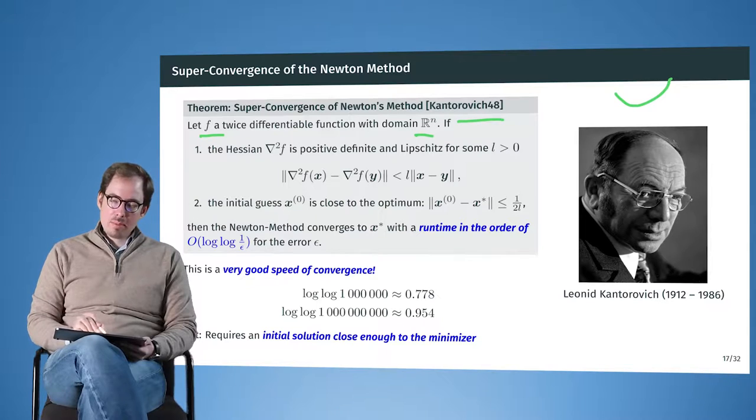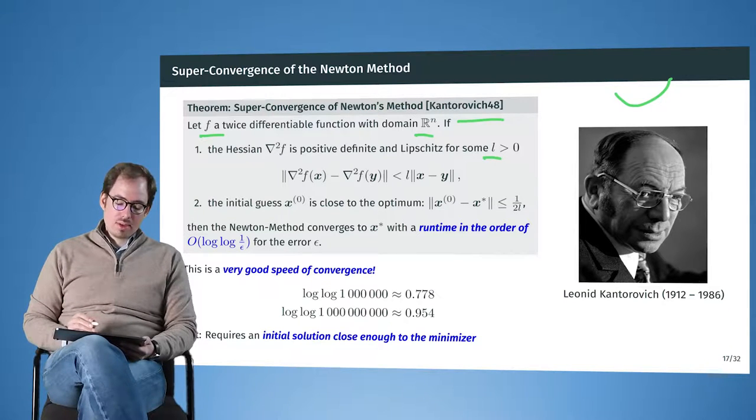if you can bound that with some number, this is called the Lipschitz number, and if we are close enough to the initial guess, then we can show, or he showed, that there is a super convergence to the minimizer.